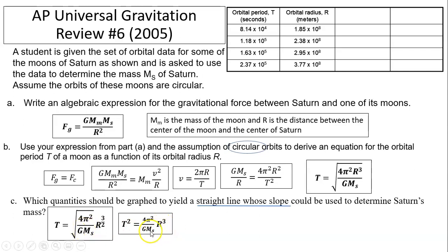From either of these graphs, we can use the slope to find Ms. So your answer should be the quantities that would yield a straight line is t² versus r³, or you can say it's t versus r to the power of 3/2.